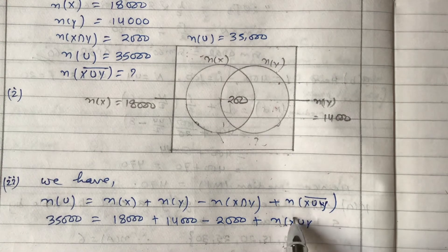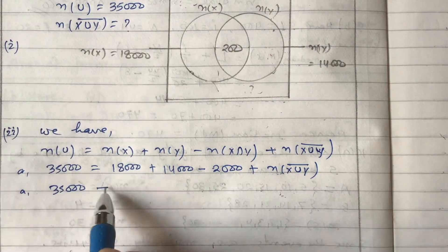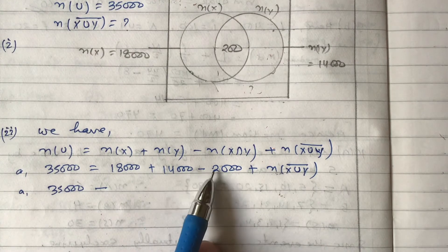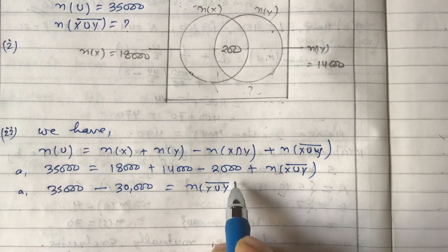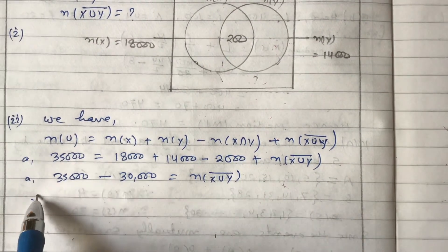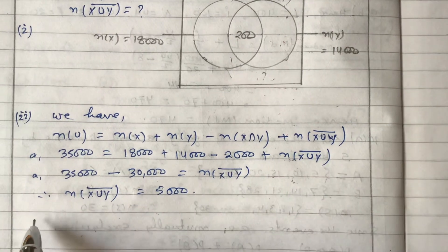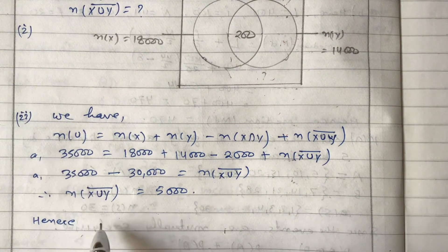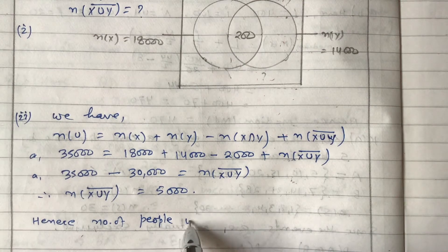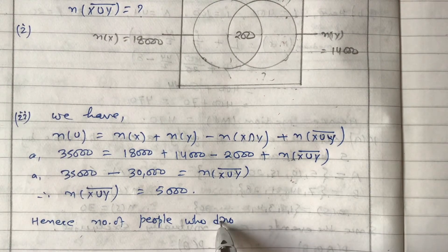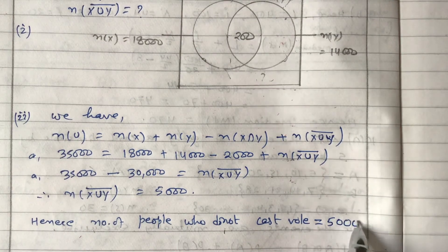35,000 = 30,000 + n(X∪Y)' since 18 + 14 = 32 and 32 − 2 = 30. Therefore n(X∪Y)' = 35,000 − 30,000 = 5,000. Hence, the number of people who did not cast their vote is 5,000.